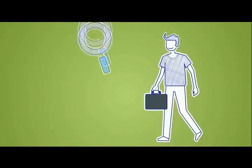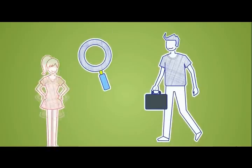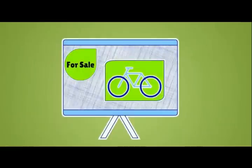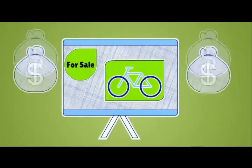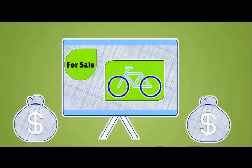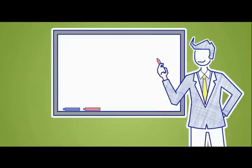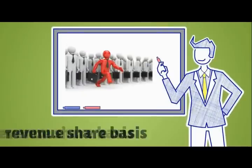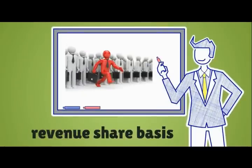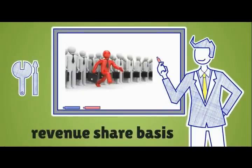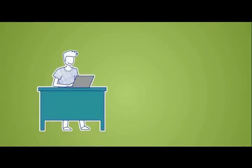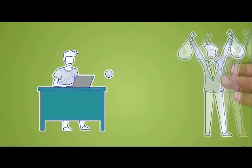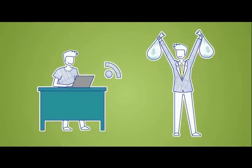Your job is to locate businesses who allow you to place these screens in their locations and share in advertising revenue. DoPublicity works with network owners strictly on a revenue share basis and provides all related software and management tools. To put it simply, you set up the network and we help you monetize it.